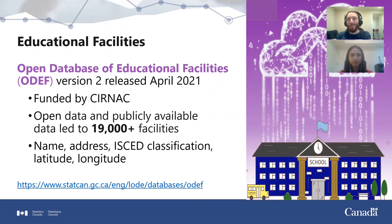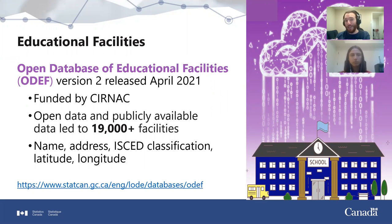We have the Open Database of Educational Facilities, a list of schools across Canada. Version 2 was released in April of 2021, funded by CIRNAC — Canadian Crown-Indigenous Relations and Northern Affairs Canada. We're primarily a cost-recovery division, so most of our work is funded through projects for external clients. In this case, there was a request to determine where all the schools in Canada are, which we answered using primarily open and publicly available data. Our current version has over 19,000 facilities, spanning from pre-kindergarten through kindergarten, elementary, high school, and post-secondary including colleges, universities, and trade schools.